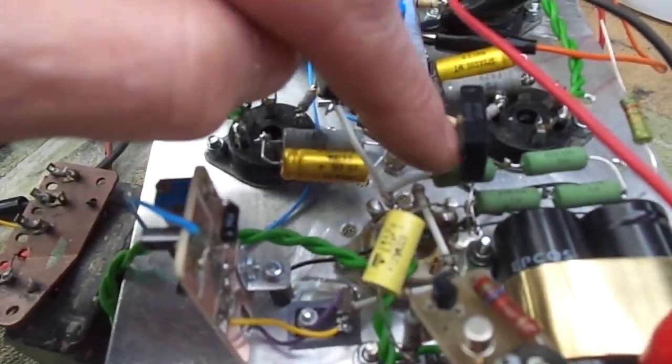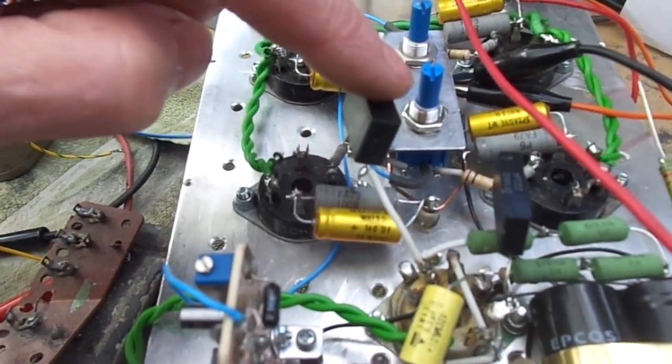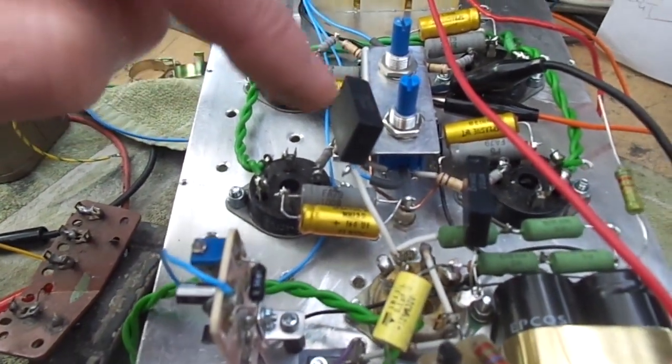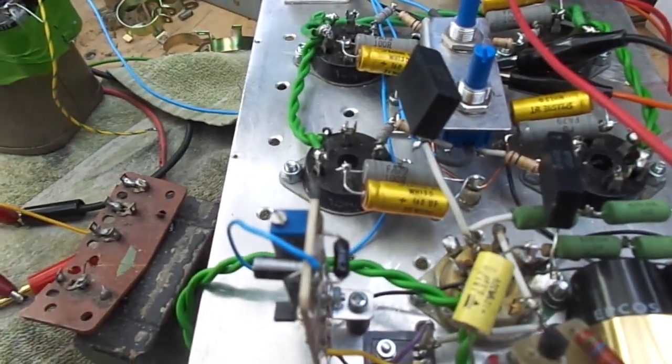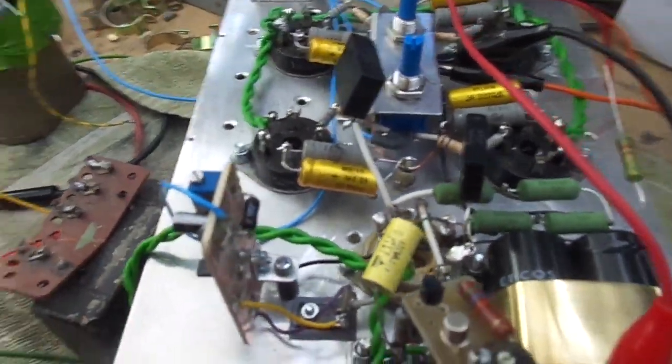That's then AC coupled over to a 6BL7 which is a mighty double triode. I think each one is capable of about, when they're both driven, about 5 watts. So more than sufficient to drive four 807s.